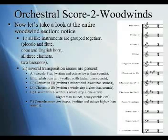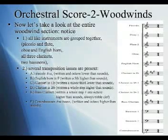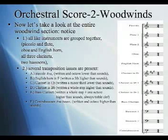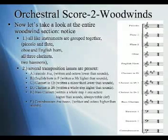Several transposition issues are present in the woodwind section. The piccolo eight-va is written an octave higher than it sounds. The English horn in F is written a fifth higher than it sounds. The clarinet in E-flat is written a minor third lower than it sounds. The clarinet in B-flat is written a whole step higher than it sounds. The contrabassoon eight-va basso is written an octave higher than it sounds. In this woodwind section — piccolo, flute, oboe, English horn, clarinet in E-flat, clarinet in B-flat, bassoon, and contrabassoon — we have six different transpositions. The flutes, oboe, and bassoon are the only instruments that read in C; all the others are transposed in some way.